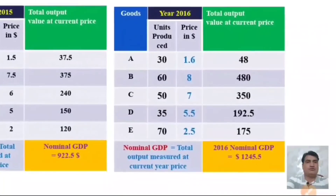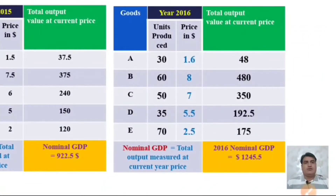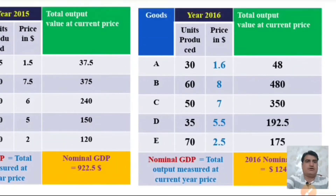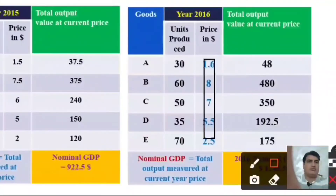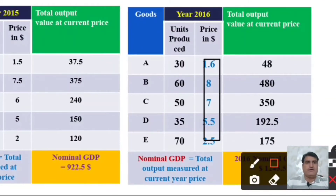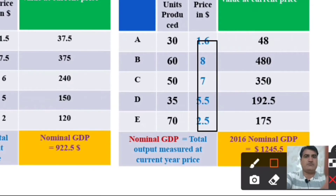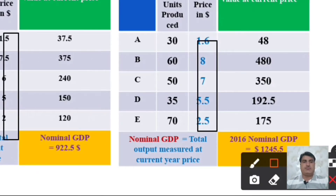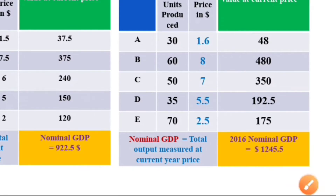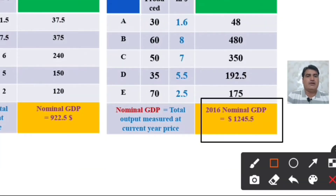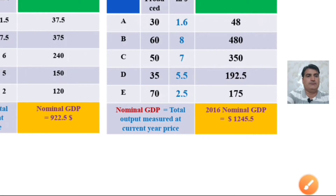The output produced in 2016 is: 30 units of commodity A, 60 units of B, 50 units of C, 35 units of D, and 70 units of E. The prices for 2016 are $1.6, $8, $7, $5.5, and $2.5 per unit. Calculating total output at current year prices, the nominal GDP for 2016 is $1,545.5, whereas the nominal GDP for 2015 was $922.5.